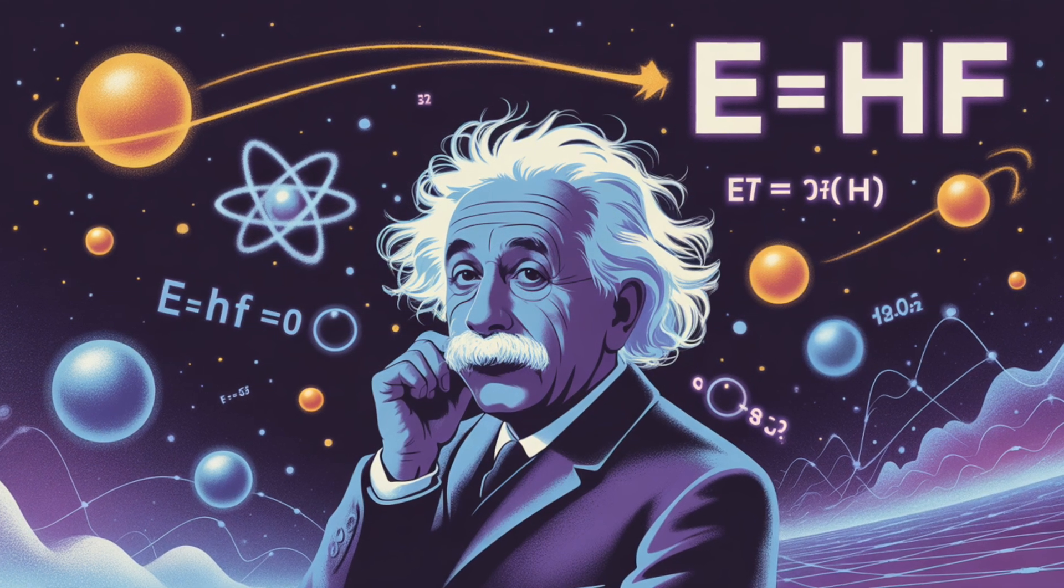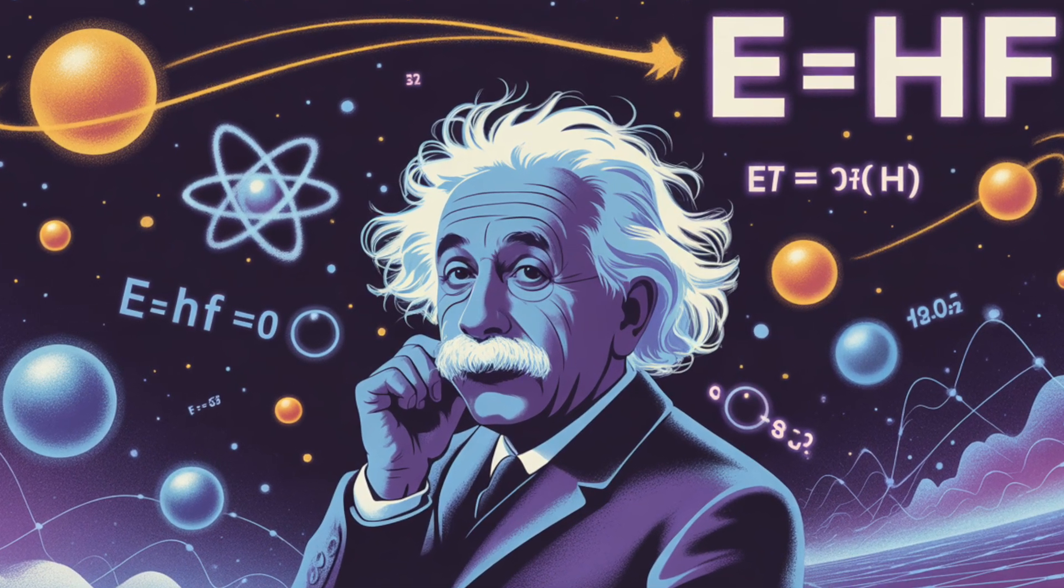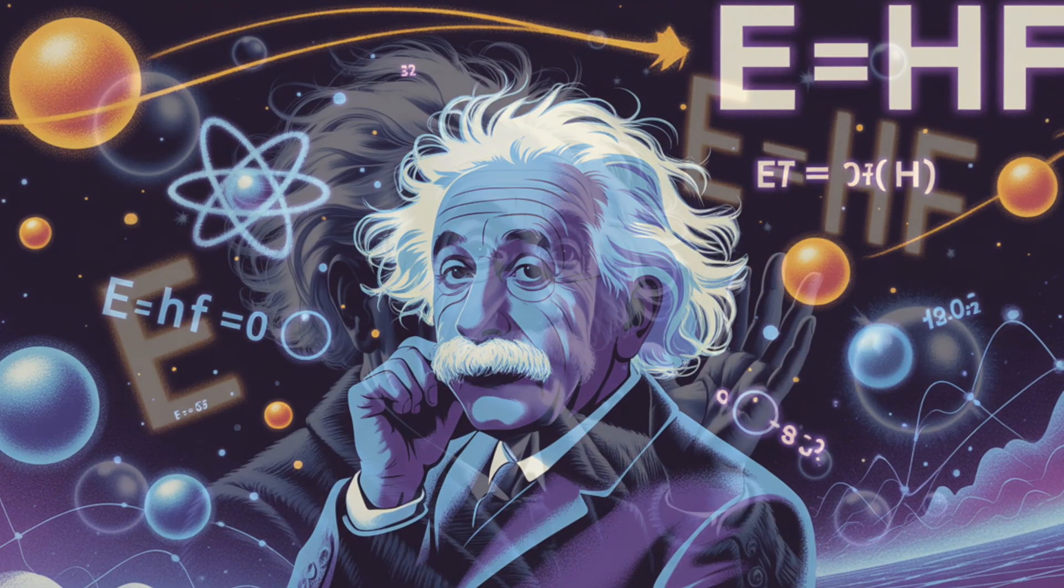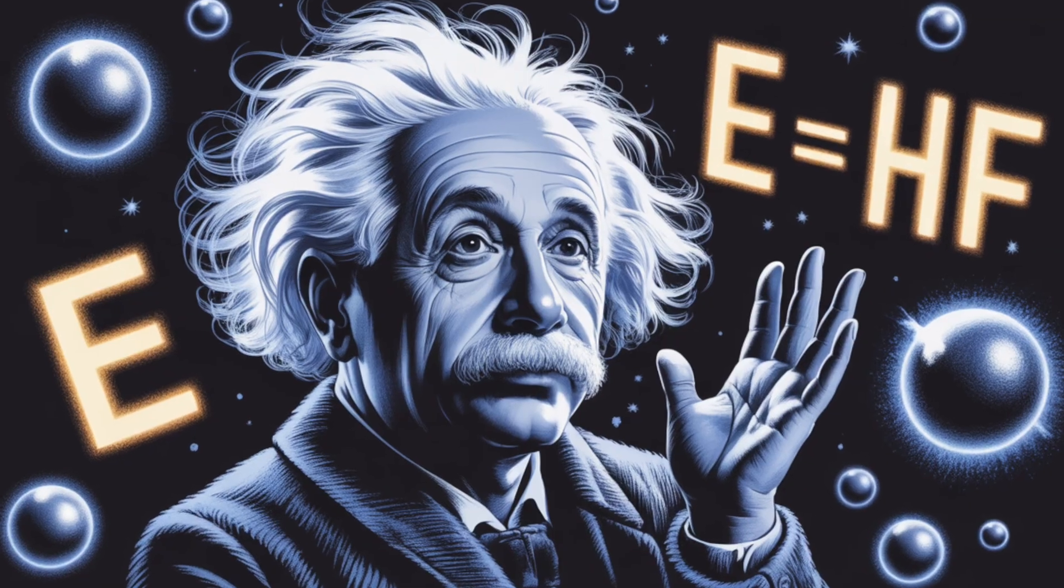Each photon carried energy proportional to its frequency, expressed by the equation E equals HF, where E is energy, H is Planck's constant, and F is the frequency of the light.